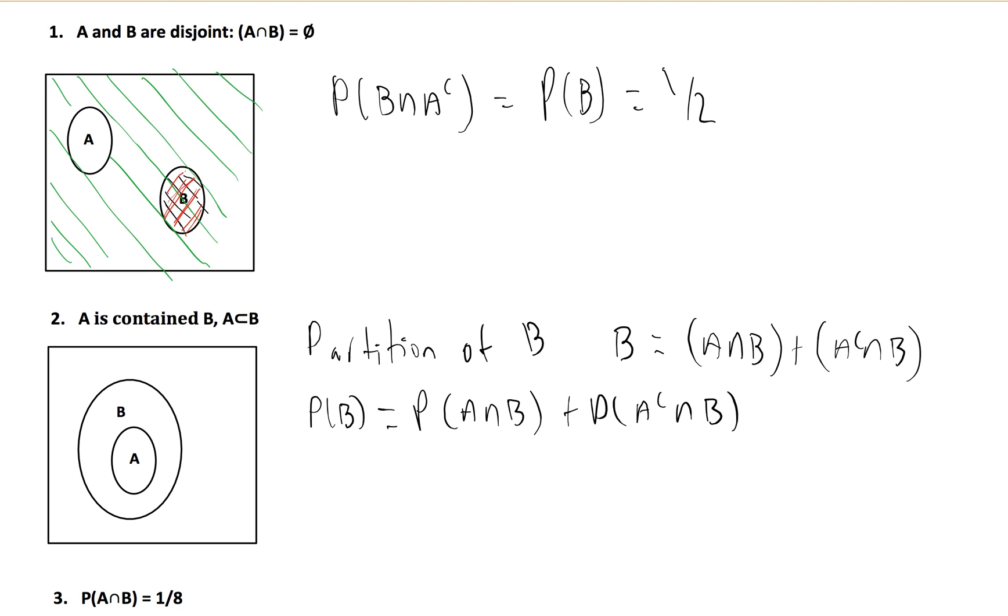We can shade B here, like we did above. And we can shade only A. And what are all of the elements that sit in both of those? Well, it's just everything that's in A again. So this simply equals A.